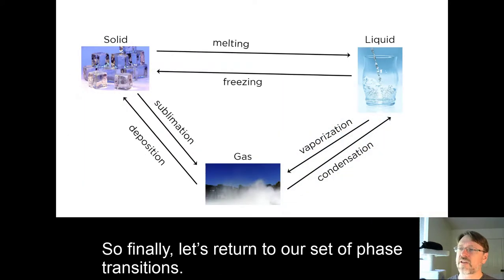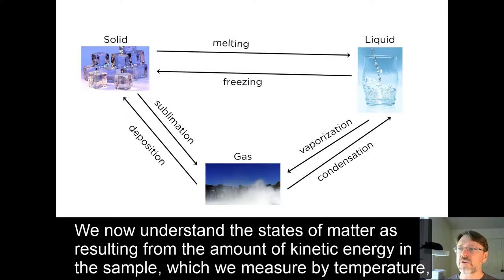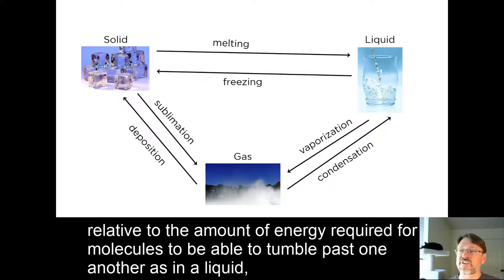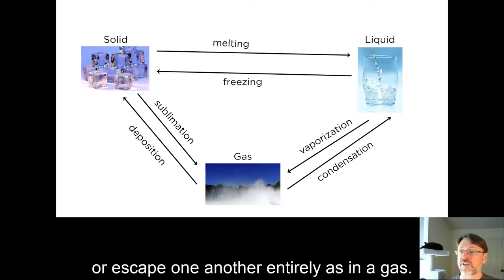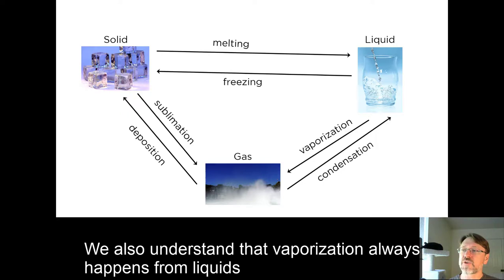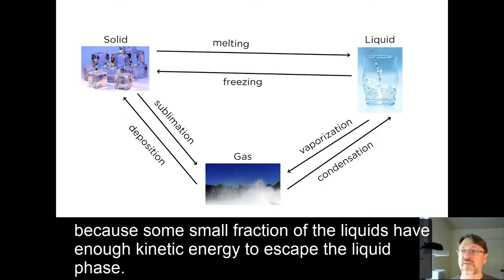So finally, let's return to our set of phase transitions. We now understand the states of matter as resulting from the amount of kinetic energy in the sample, which we measure by temperature, relative to the amount of energy required for molecules to be able to tumble past one another, as in a liquid, or escape one another entirely, as in a gas. We also understand that vaporization always happens from liquids because some small fraction of the liquids have enough kinetic energy to escape the liquid phase.